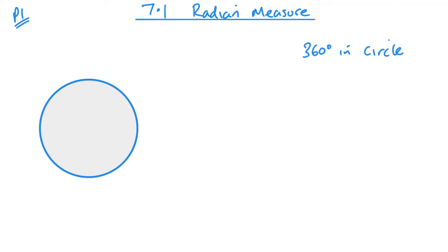So essentially, a circle is split up into 360 equal pieces. And that brings us on to the radian.